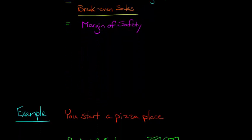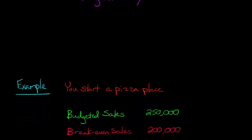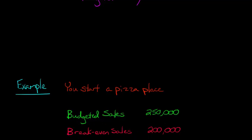Let's assume that you start a pizza place — a pizza parlor. First you say: what do I forecast my sales will be? The budgeted sales — what you think the sales will be — will be $250,000. That's what you expect for the year. And you've done some other calculations where you say: for me to break even, my break-even sales would need to be $200,000. If you don't know how to calculate break-even sales dollars, you can check out our other video, but for right now I'll just take it as granted that you know how to do that.